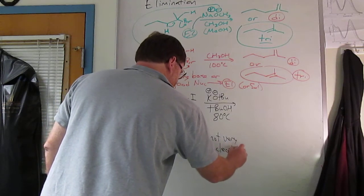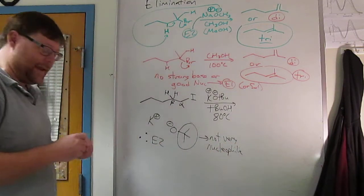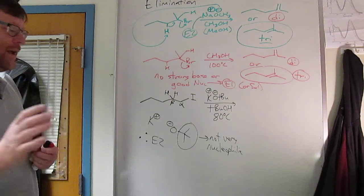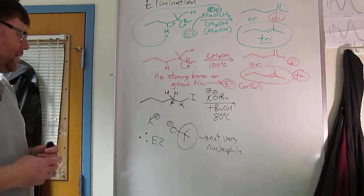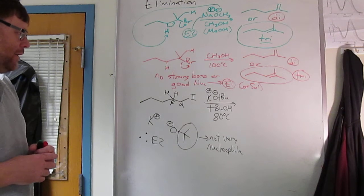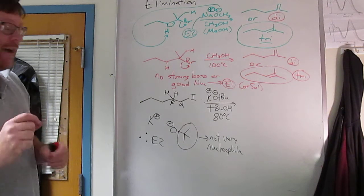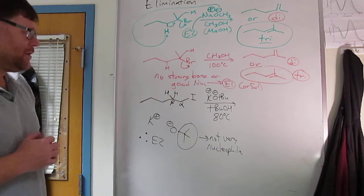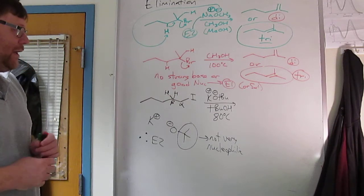That's not to say it can't be a nucleophile. If you have a molecule that cannot undergo elimination, t-butoxide can be a nucleophile. But if elimination is possible, and it is here because we have a couple of beta hydrogens, potassium t-butoxide will almost always do E2.